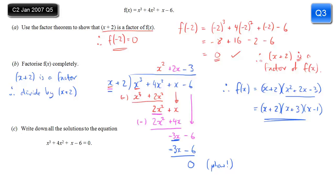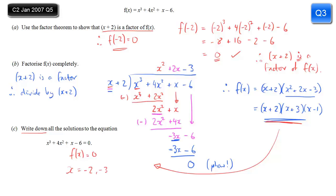Finally, part C wants the solutions to the equation — when it says 'write down', that's a clue you won't need to do very much. This equation is just f(x) = 0, so we just want the roots from our factorised form. The first bracket gives x = −2, the second bracket gives x = −3, and the third gives x = 1. Those are the solutions to the equation.